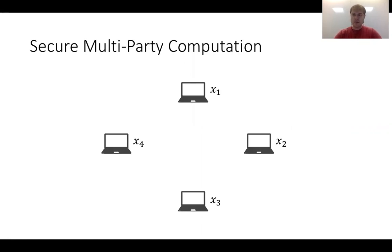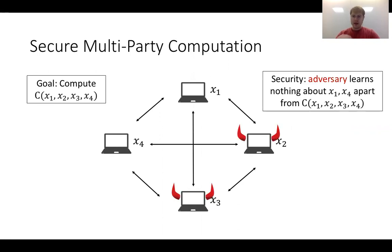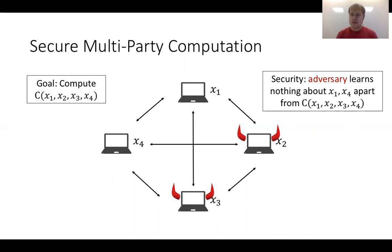We consider multiple parties, each with a private input X_i, that wish to compute some public circuit C over their private inputs. They do this by communicating and eventually all learning the output. For security, we want to ensure that an adversary that corrupts any subset of these parties — here parties two and three — won't learn anything about the honest party inputs X_1, X_4, except for what it learns from the output of the functionality. This is a classic problem in crypto dating back to the 80s.